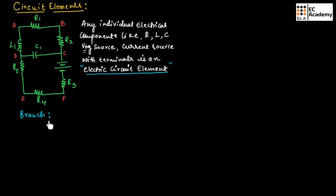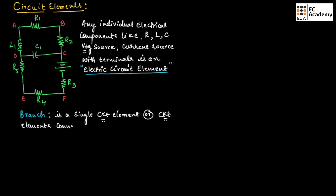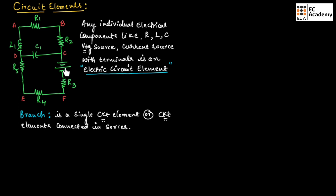Now let us understand what is a branch. A branch is a single circuit element or circuit elements connected in series. From A to B, we have a single circuit element — we can call AB as a branch of the circuit. In the same way, CF has circuit elements connected in series, so we can call CF as a branch of the circuit.